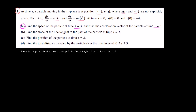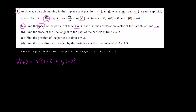The speed is really just the magnitude of the velocity vector. Our velocity vector as a function of time is going to be equal to the derivative of our x position as a function of time — the velocity in the x direction times the i unit vector — plus the velocity in the y direction times the j unit vector. In this case, x prime of t is 4t plus 1, so this is 4t plus 1 times the i unit vector.